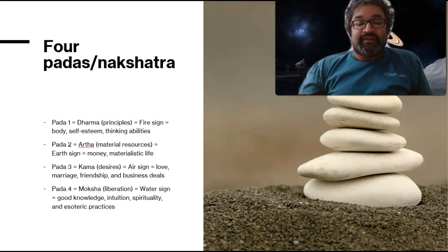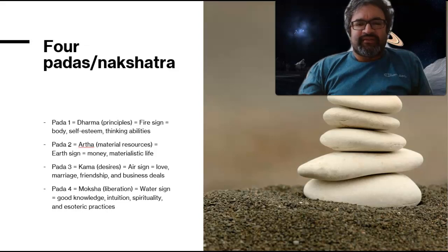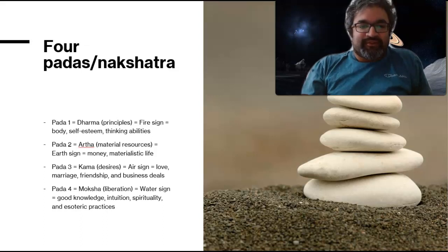Each of these four padas makes up one nakshatra. If you divide 360 by 27 you get roughly 13.3 degrees, so each nakshatra is about 13 degrees. You can divide it further into padas.